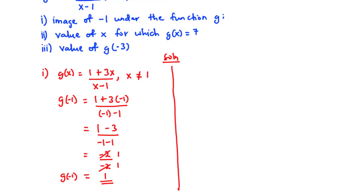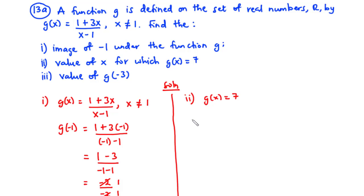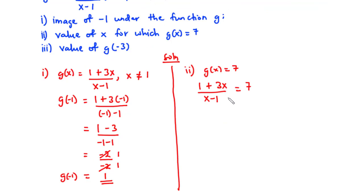Now let's solve part ii — the value of x for which g(x) is 7. So if g(x) is equal to 7, we are going to find the value of x. We have g(x) equal to (1 + 3x) over (x minus 1), and we are told that this function is equal to 7. Let's solve for x.